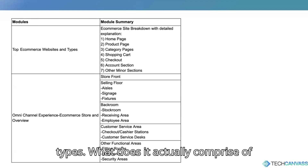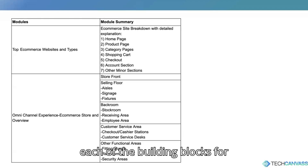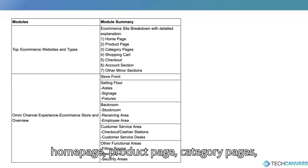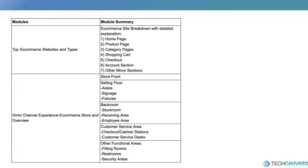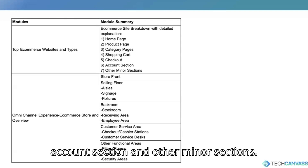We will look at what each building block of an e-commerce website actually comprises and why it is important to understand each one. We will talk about the home page, product page, category pages, shopping cart, checkout section, account section, and other minor sections.